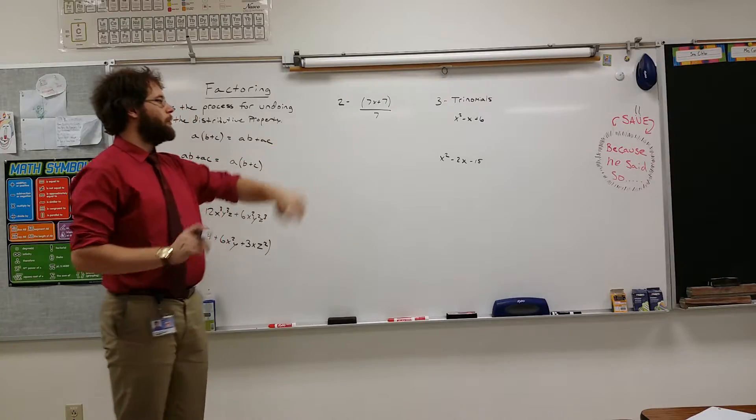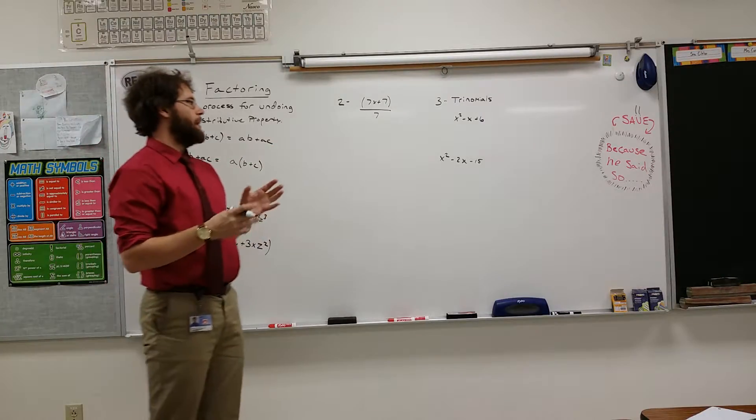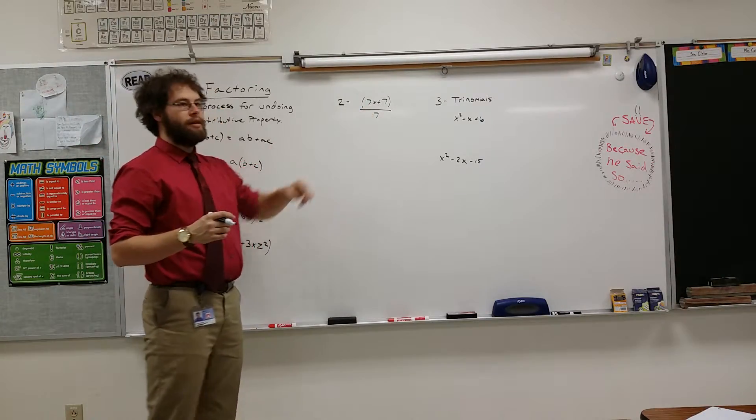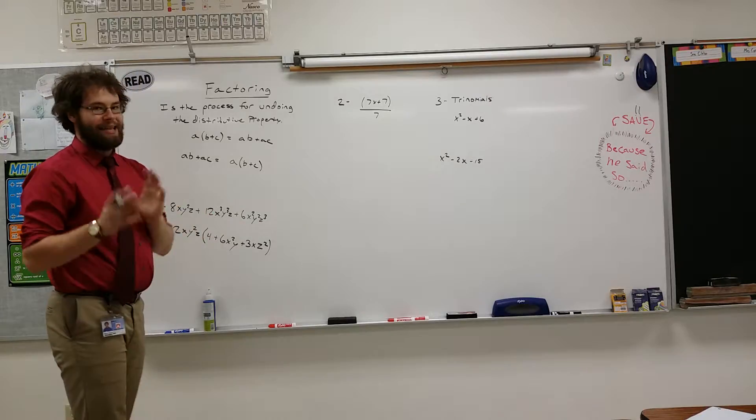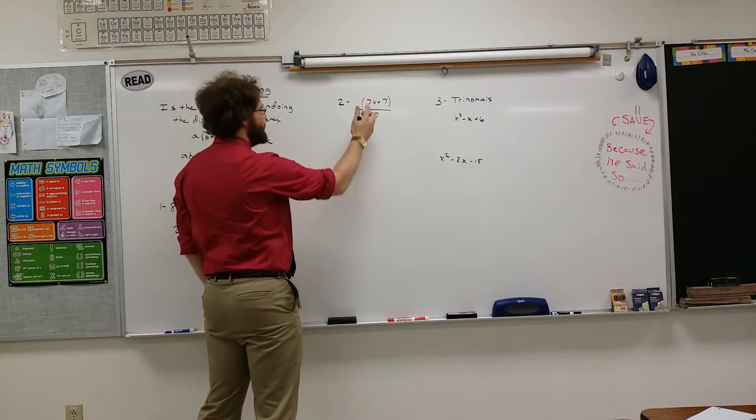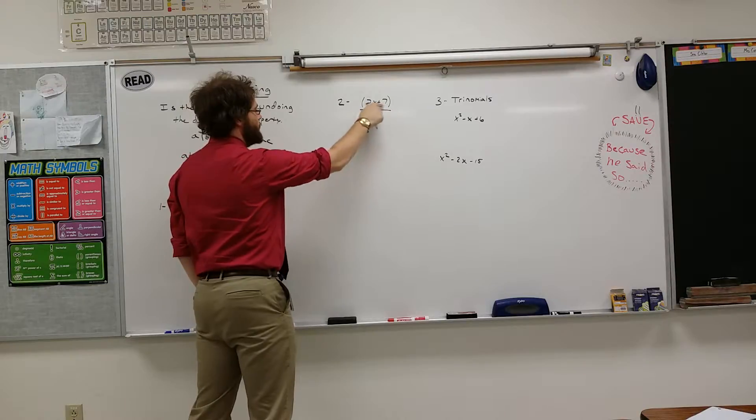Our next example is where we're going to factor out of something like this, 7X plus 7, and then we're going to cancel something. So, for instance here, we can see that there's a 7 in both of these things.